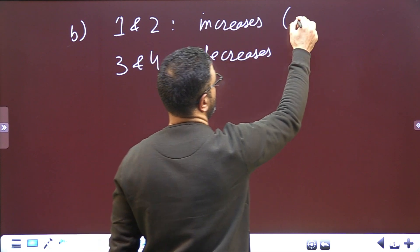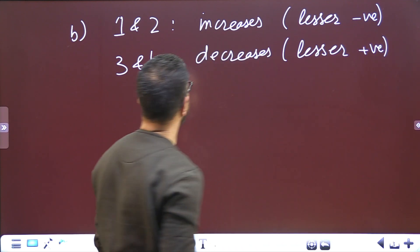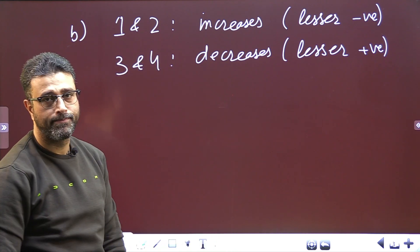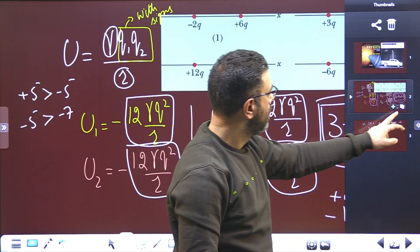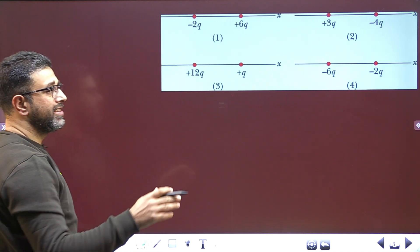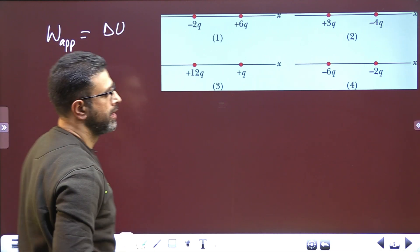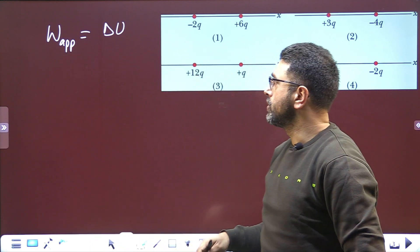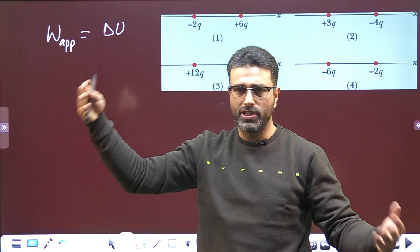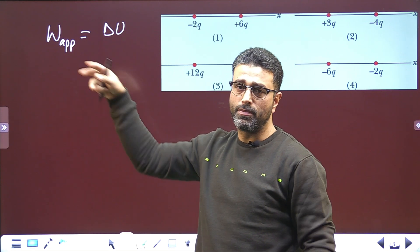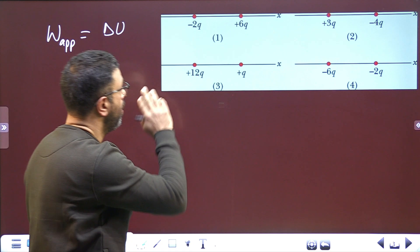There is another way to analyze Part B using the work-energy relationship. The work done by an external agency equals the change in potential energy: W_ext = ΔU. If you do positive work increasing the separation, potential energy increases; if you do negative work, potential energy decreases.